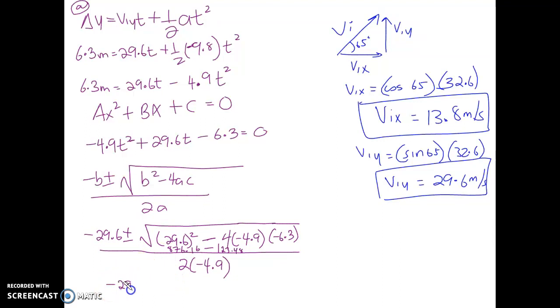So negative 29.6 plus... I'm hoping you're copying the question down as I do it. Yes, what do you get? 876.16 minus 123.48 when you square root the two, what do you get?